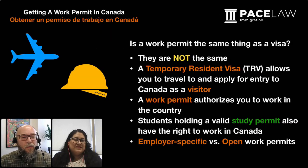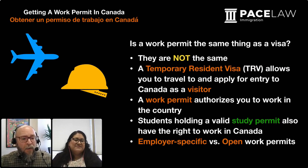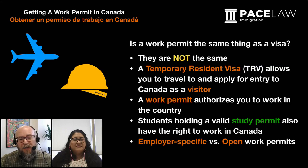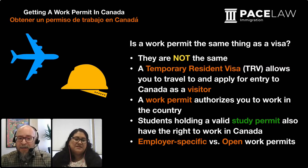Sure. In our presentation today we are going to talk about getting a work permit in Canada. We should start with some basics: what is a work permit, what is a visa, what is an ETA or electronic travel authorization. I'm going to go through it first in English and then we're going to discuss it in Spanish. Work permits and visas are not the same thing. A visa gives you the right to travel to a certain country and maybe be allowed entry. A work permit authorizes you to work once you're in that country. An ETA is an electronic travel authorization for visa-exempt countries that allows you to travel to Canada and enter as a visitor.